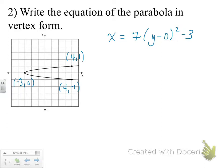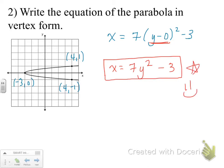Okay, so if you got an a value of positive 7, you did a great job. And if you wrote your equation in this form, x equals 7 times y minus 0 quantity squared minus 3, that's a pretty good equation. But remember that when we subtract 0 from x or y, that just becomes x equals 7 times y squared, y minus 0 is just y, minus 3. And this is a really great form of the equation. If you got this, you did an excellent job. Be proud of yourself.